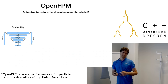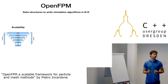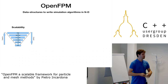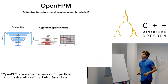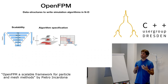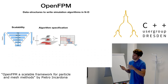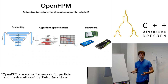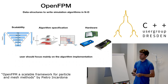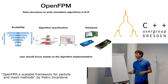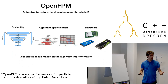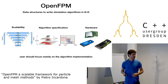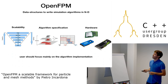OpenFPM is a library that provides data structures to write simulation algorithms in n-dimensions, not only in 3D. The challenges it addresses are: scalability across one to hundreds of computers, flexibility based on algorithm specifications, and support for both CPU and GPU. The concept is giving users data structures so they can code their own numerical methods without focusing on these difficult, time-consuming infrastructure problems.